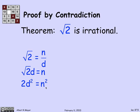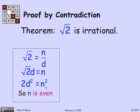But if n squared is even, then n is even. And I'm halfway there. I've shown that the numerator is even. OK, let's keep going.